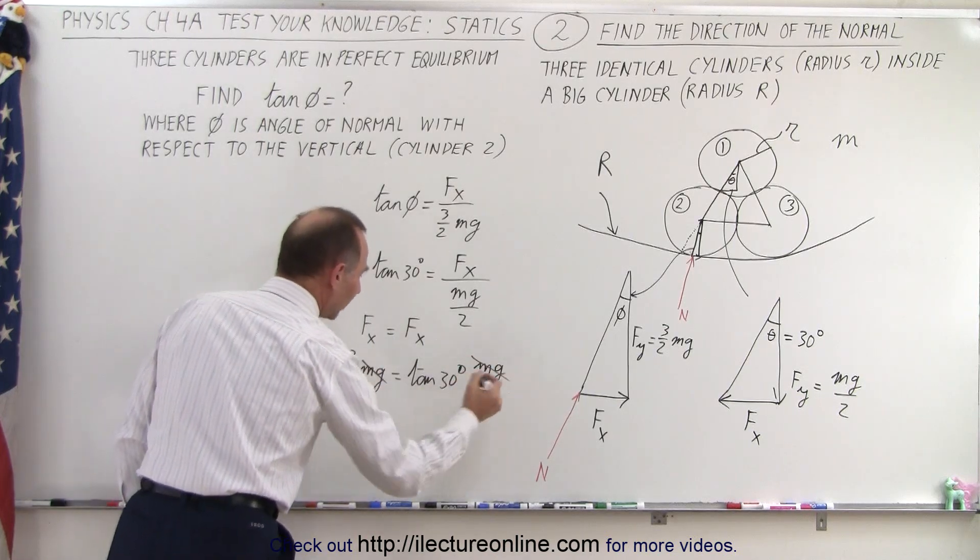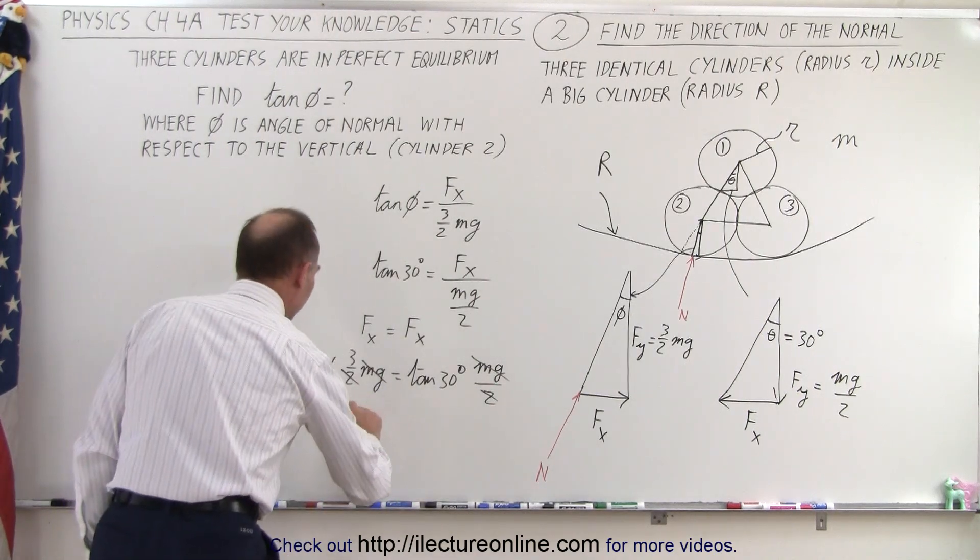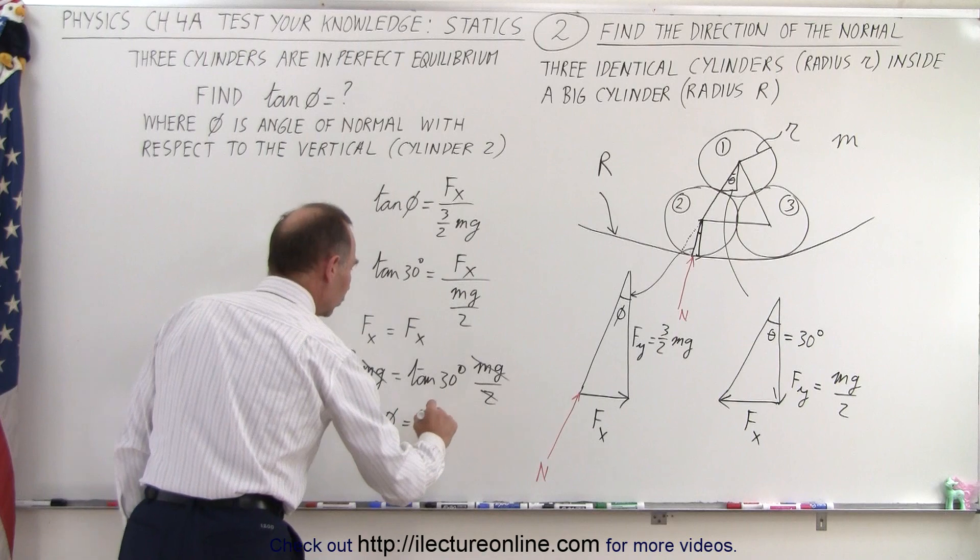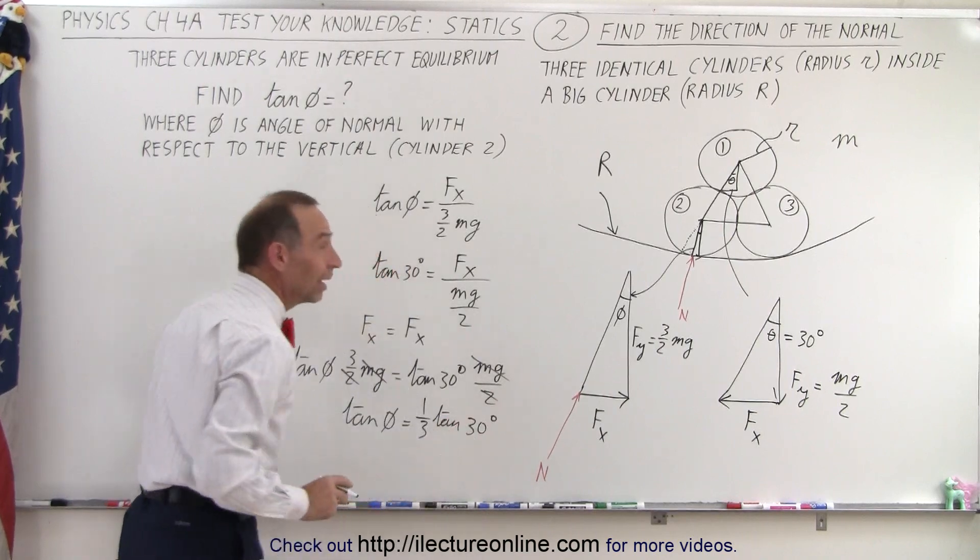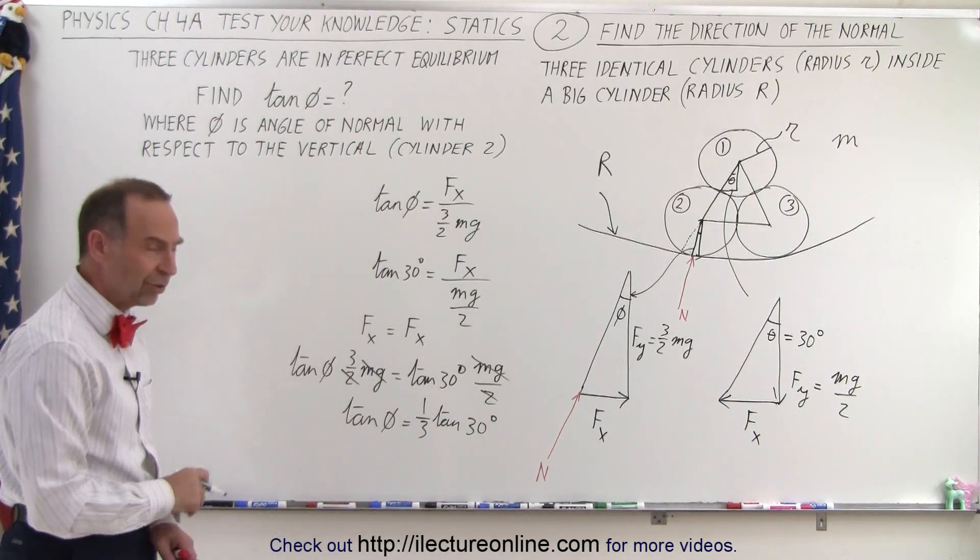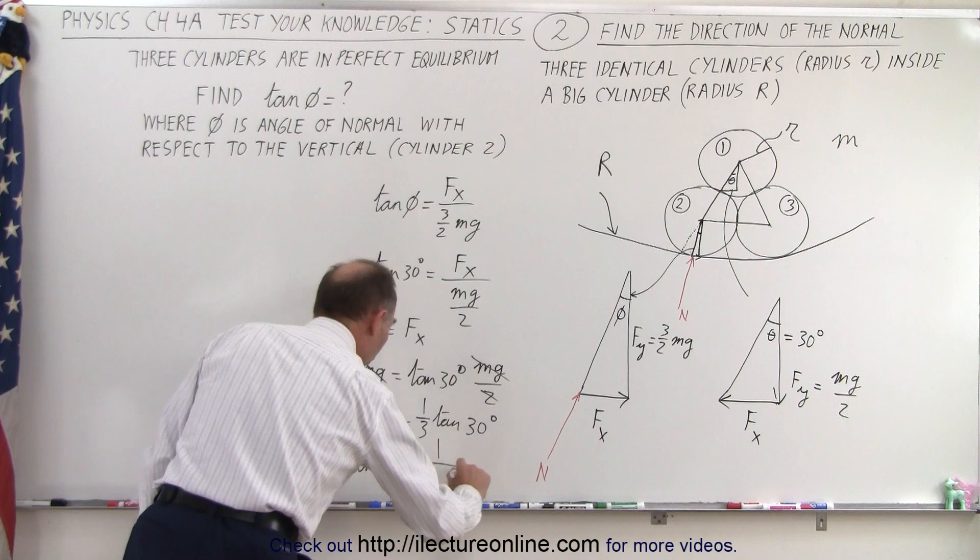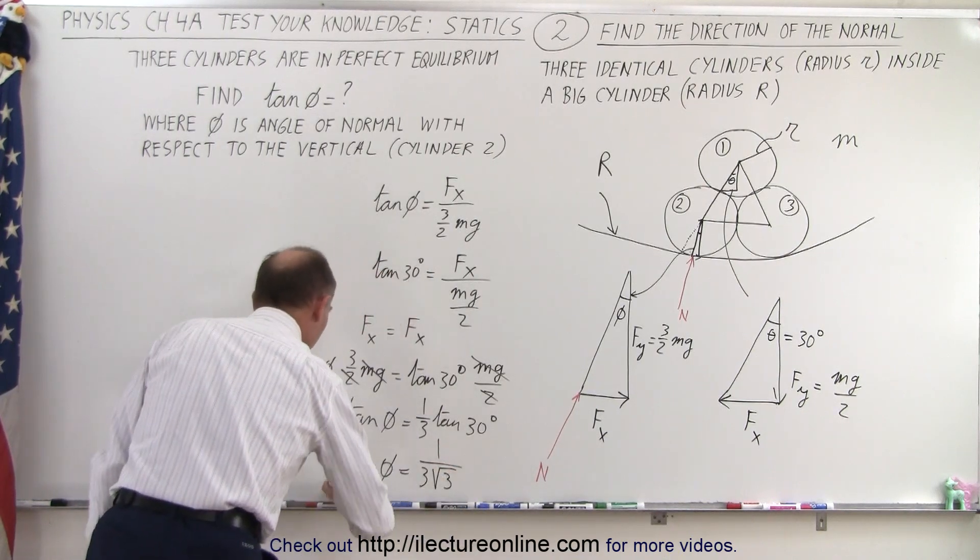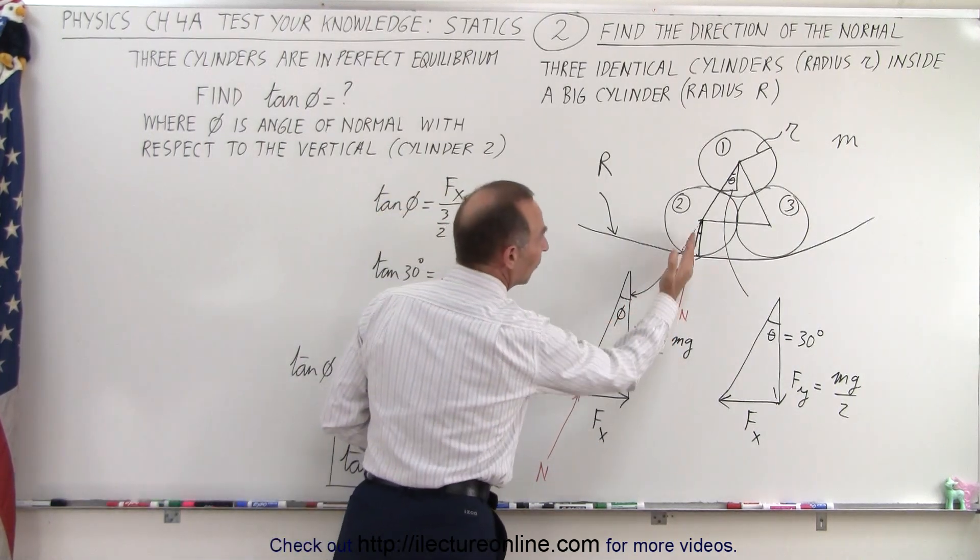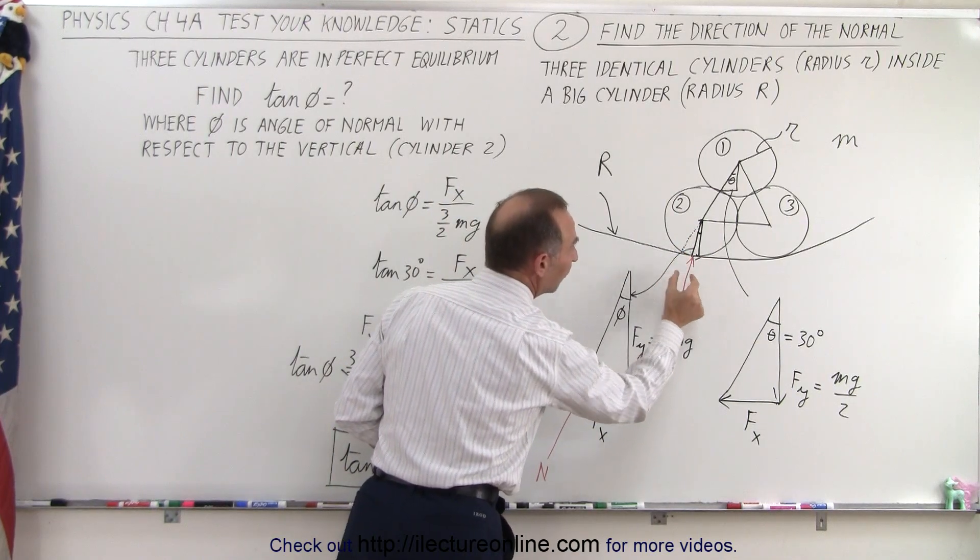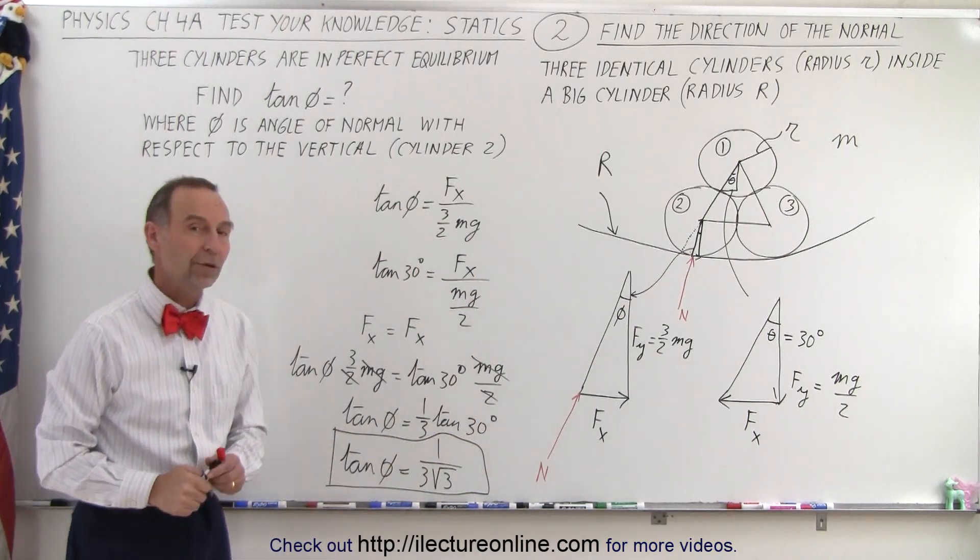Notice that Mg's cancel out on both sides, and the 2's cancel out on both sides, so that means that the tangent of phi is equal to 1 third, if I bring the 3 over here, 1 third times the tangent of 30 degrees. And of course now we need to know what the tangent of 30 is, which is 1 over the square root of 3, that means that the tangent of phi must be equal to 1 over 3 times the square root of 3. And now we have found a relationship between the angle phi, which is the angle from the normal to the vertical, the angle phi between this force and the vertical, the tangent of the angle is equal to 1 over 3 times the square root of 3.